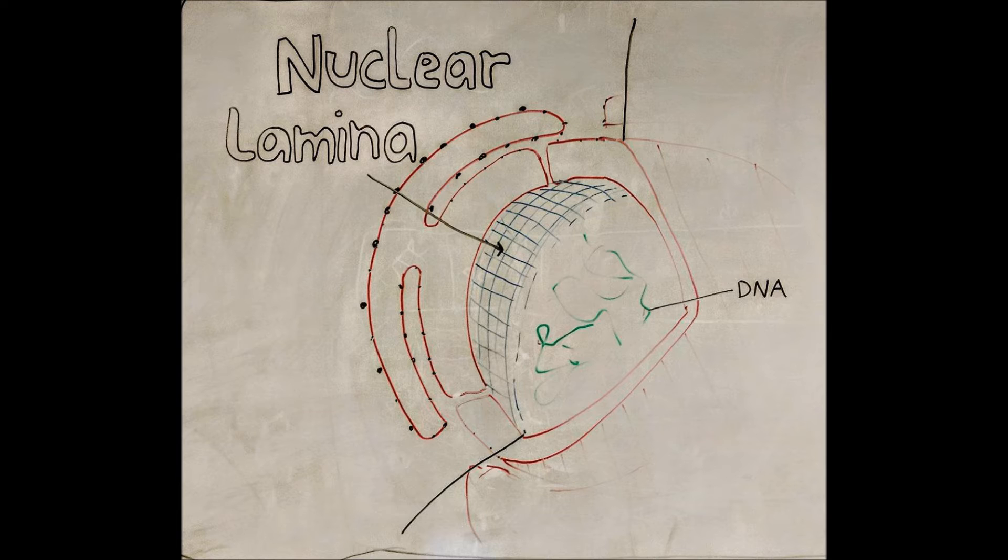On this diagram, we can see that the lamina is represented by a blue whiteboard marker and we can see how it forms an inner mesh-like layer which encapsulates the rest of the nucleus and provides support for the nuclear envelope that it lies alongside.